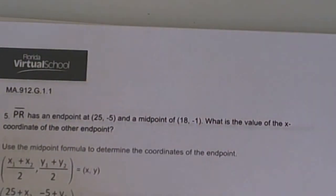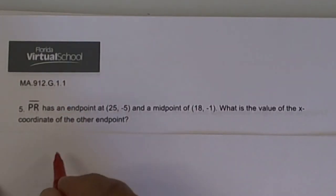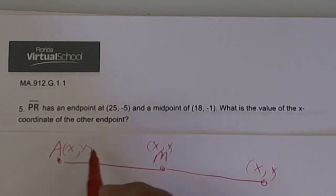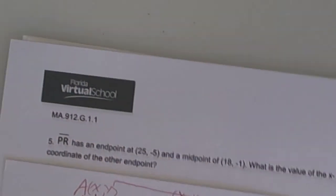This one is a little harder. This one, they give you the endpoint. Let's call it A. They give you the midpoint, we'll call it M. And you're looking for the other endpoint, we'll call X, Y. Remember, it's going to be this plus this divided by 2 equals this. And then Y plus Y divided by 2 equals the Y on the midpoint. Try and do it, and then I'll show you on the video.